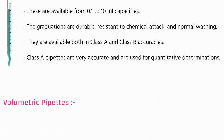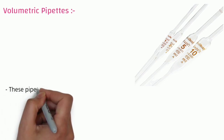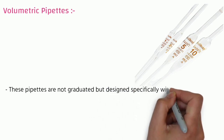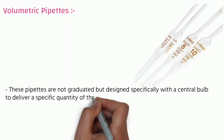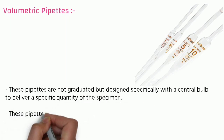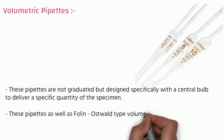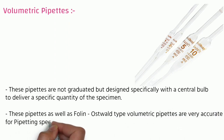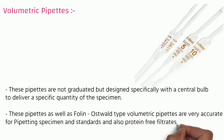Volumetric pipettes — you can see some examples in this picture. These pipettes are not graduated but are designed specially with a central bulb to deliver specific quantities of specimen. These pipettes, as well as the Ostwald-Folin type volumetric pipettes, are very accurate for pipetting specimens, standards, and protein-free filtrate.